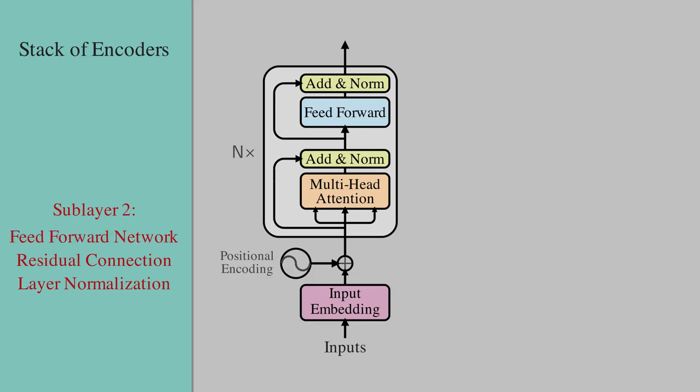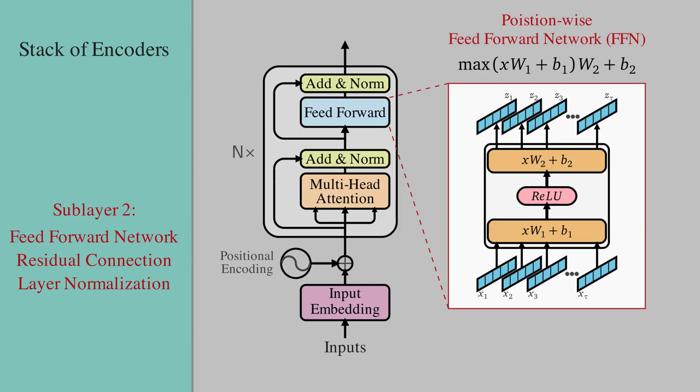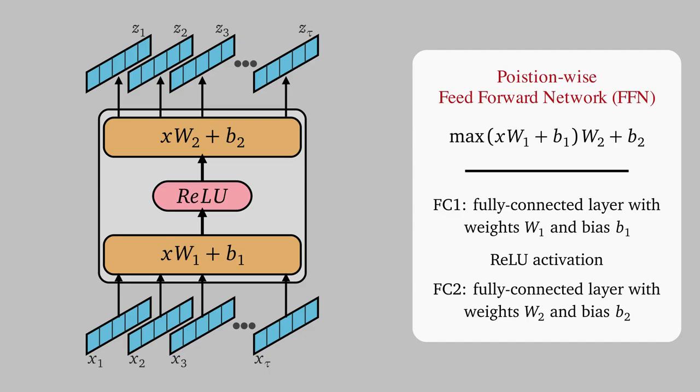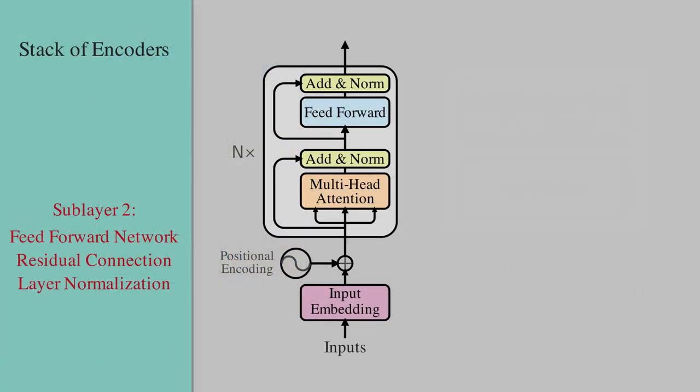After that, we move to the second sublayer which is a position-wise feed-forward network or FFN. The FFN is mathematically defined as shown in this equation. But to understand what it does, I like to expand this FFN block as shown here, which includes two fully connected layers and a ReLU activation in between. The first fully connected layer expands the hidden dimension from 512 to 2048, and then the second one brings it back to 512. The input is a sequence of vectors X1 to Xt, where each vector Xi has dimensionality D model.